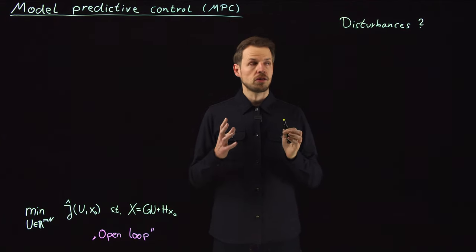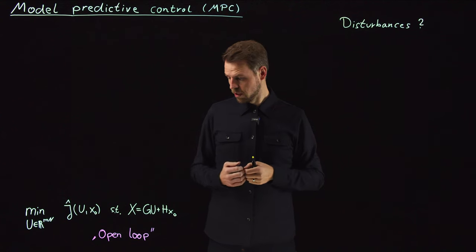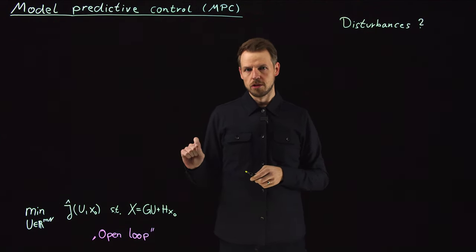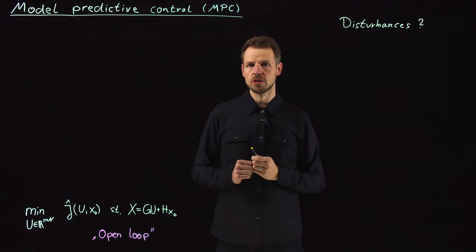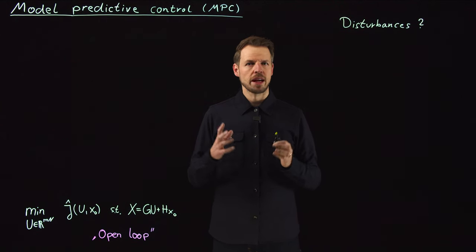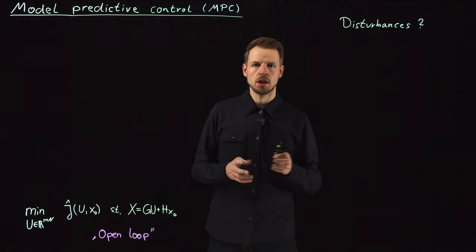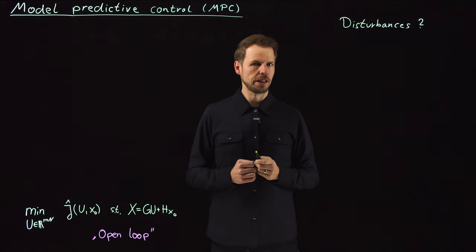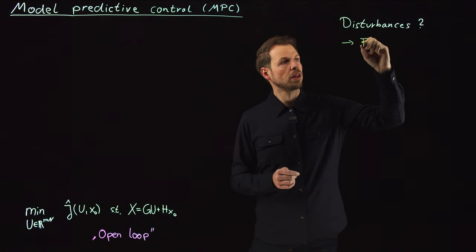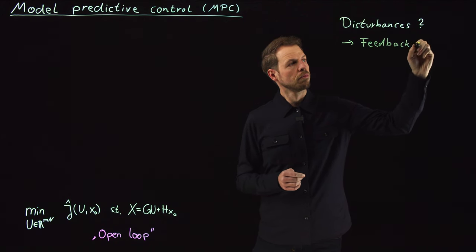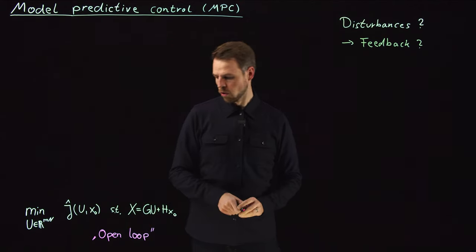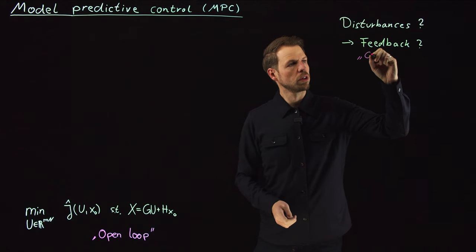And so the issue we run into is in this open loop setting, we diverge. So we determine an optimal input given this model and if there's only a small deviation between the model and the true system behavior, this will accumulate over a longer horizon into completely different behavior. And this is clearly an issue if we're talking about technical systems that we want to control, to stabilize or to tune in a way that they behave energy efficiently and so on. So the question that we need to answer here or the approach that we need to do is the question of feedback.